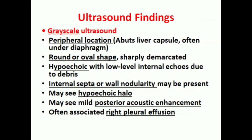The ultrasound findings are as follows: the lesions are located in the periphery, abutting the liver capsule and sometimes the diaphragm. The shape is round or oval, sharply demarcated, and hypoechoic with low-level internal echoes due to debris. Internal septa or wall nodularity may be present, and there may be a hypoechoic halo surrounding the lesion. Being a cystic lesion, there will be posterior acoustic enhancement. Sometimes it is accompanied by right pleural effusion.